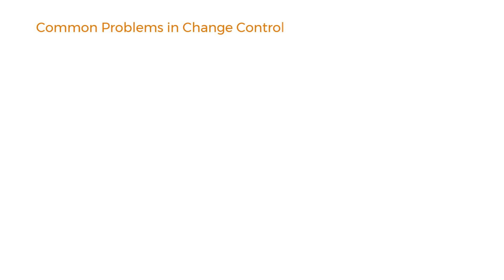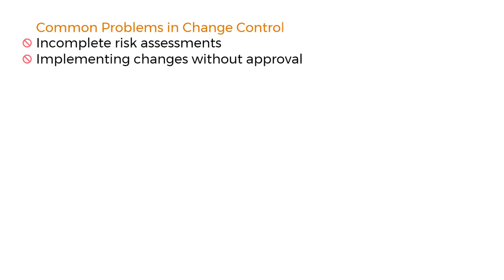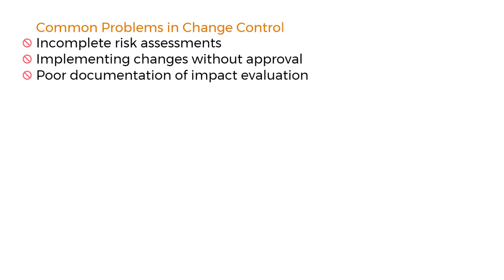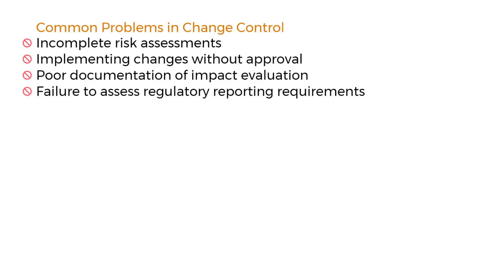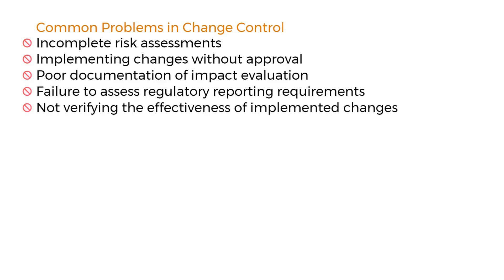Common problems in change control include: incomplete risk assessments, implementing changes without approval, poor documentation of impact evaluation, failure to assess regulatory reporting requirements, and not verifying the effectiveness of implemented changes. These can easily trigger regulatory observations.